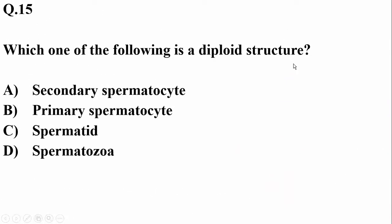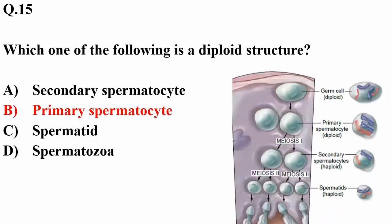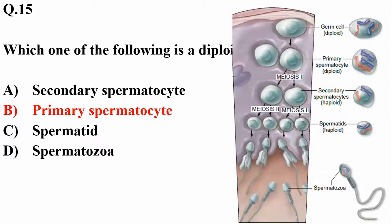Question number fifteen: which of the following is a diploid structure? Primary oocytes are diploid structures, while the others in the list are haploid ones.